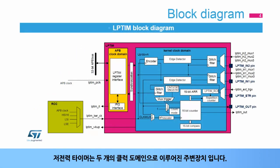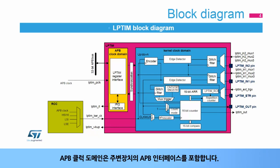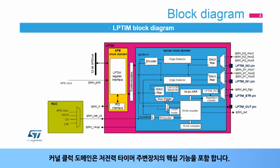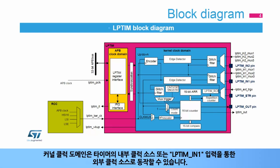The low power timer is a peripheral with two clock domains. The APB clock domain contains the peripheral's APB interface. The kernel clock domain contains the low power timer peripheral's core functions and can be clocked by internal clock sources or by an external clock source through the timer's LP-TIM-N1 input.